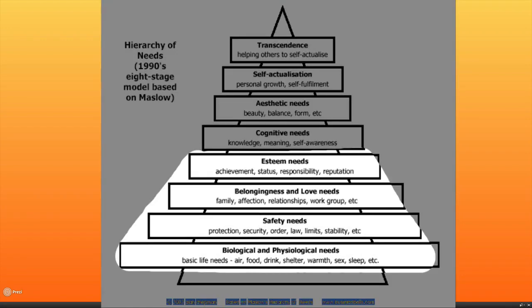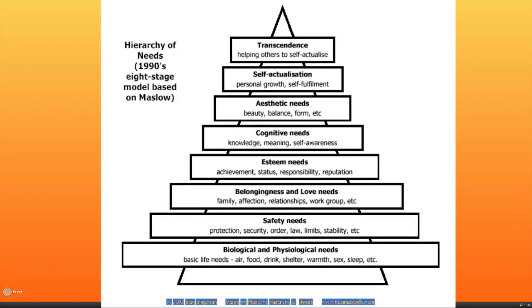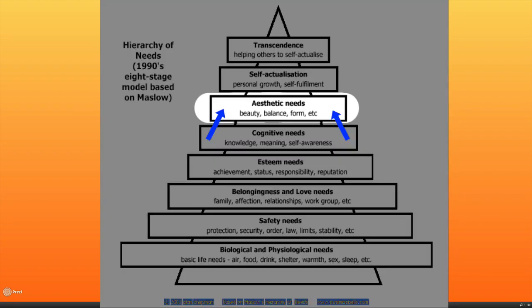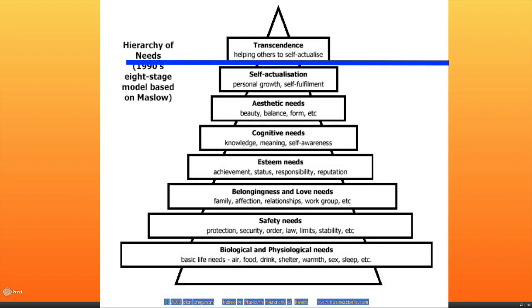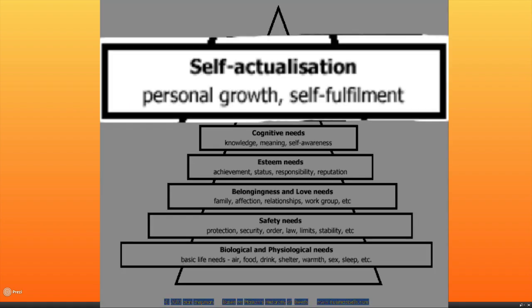And once you've got a base of love settled and sorted, your esteem needs can arise, where you start to look for achievement and status and responsibility. With those needs cared for, you can really begin the search for knowledge, meaning and self-awareness. From that, you can shift upwards into aesthetic needs, where you begin to sense the need for beauty and balance to your life, and you start to try to become a complete and whole person in your own right. Maslow then moved on to self-actualization, which for a long time he thought was the highest need, where you really strive for personal growth and self-fulfillment.